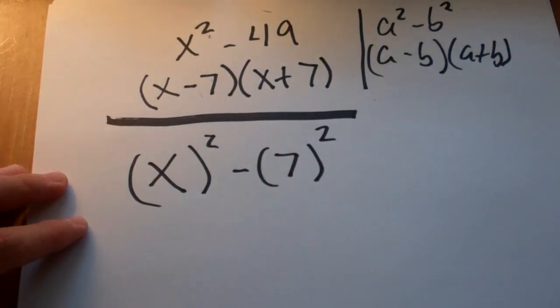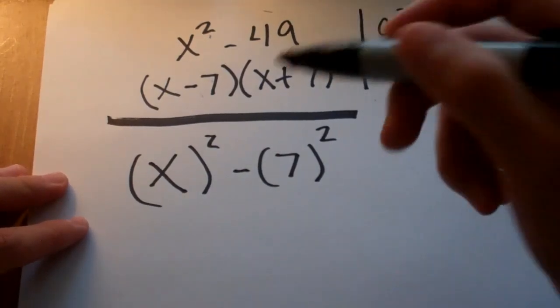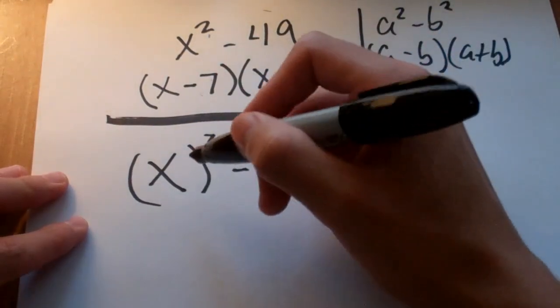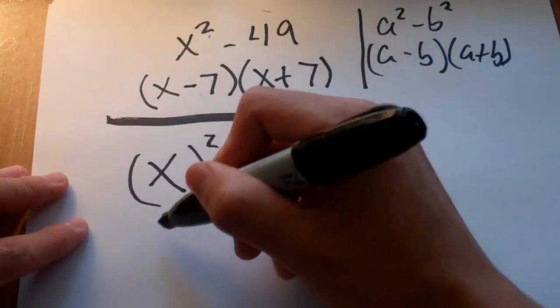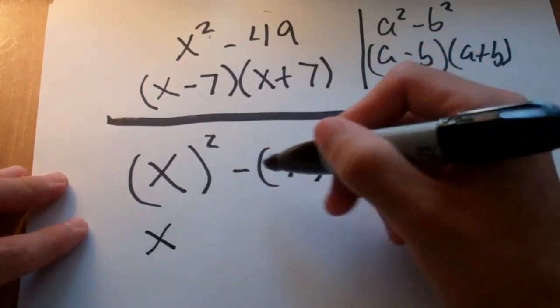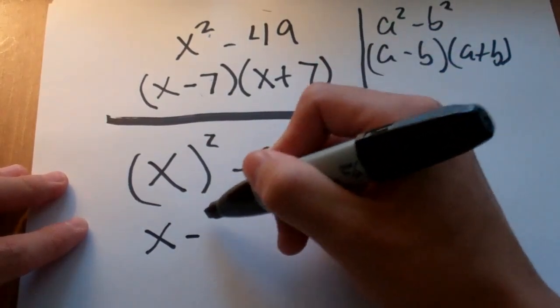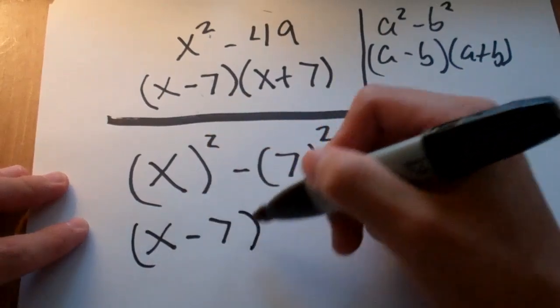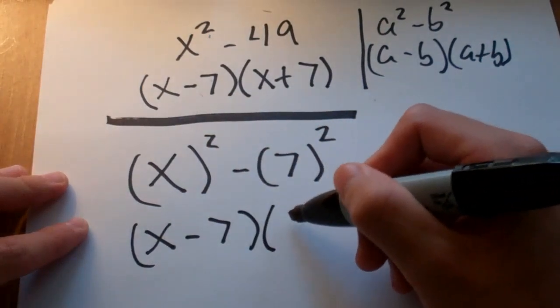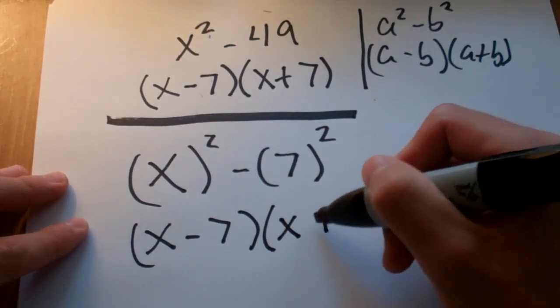So, that might be easier to see that way, you know, maybe with some of the bigger numbers. So, now we can just say, a, which is x, minus b, which is 7, times a plus b.